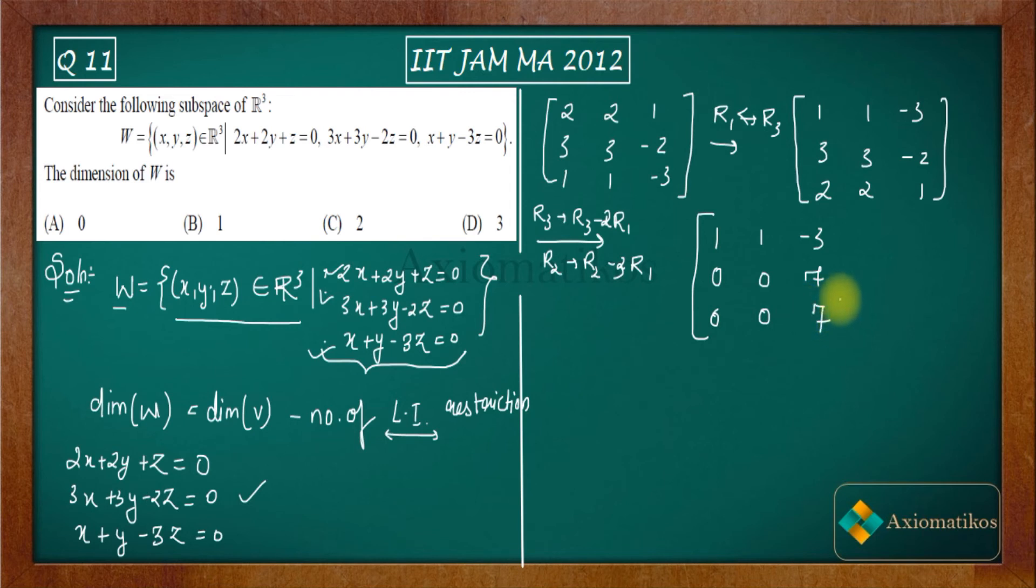Now just subtract these two: r3 → r3 - r2. So what you will get? You will get this matrix: 1, 1, -3; 0, 0, 7; 0, 0, 0.